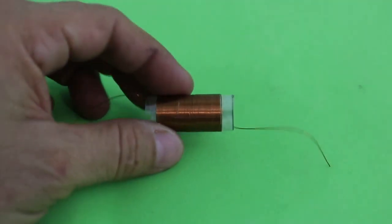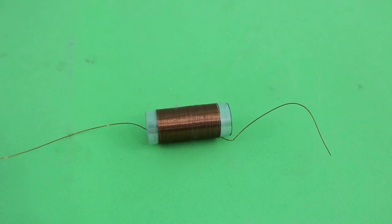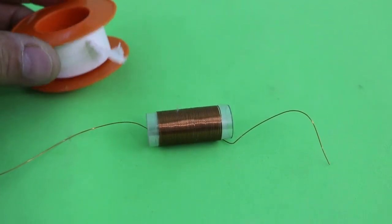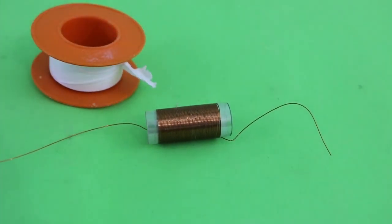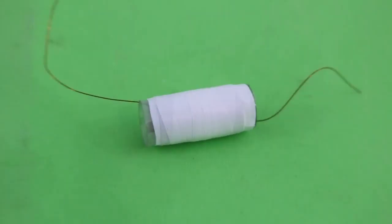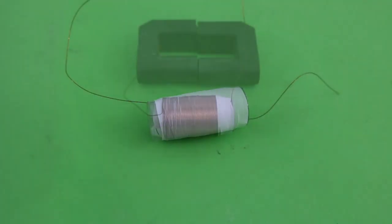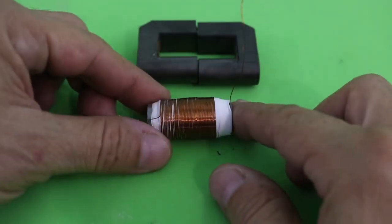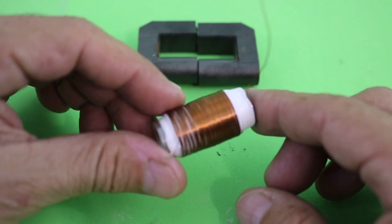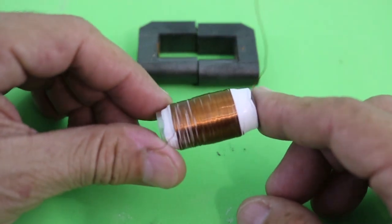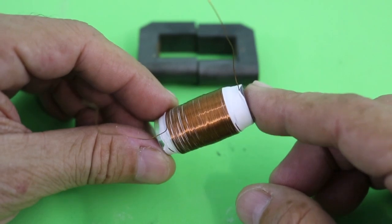Between each layer it is important to add insulation. You can use Teflon tape or any other insulation tape. Here we have the finished coil: 370 turns of magnet wire gauge 30.